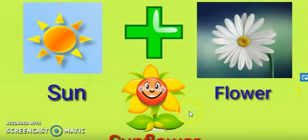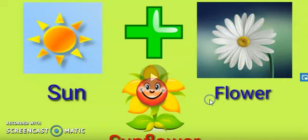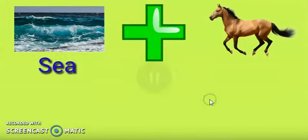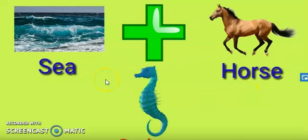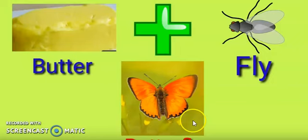Sun plus flower, it makes sunflower. Sea plus horse, what will come? Yes, seahorse. Butter plus fly gives you butterfly. But these are only words that when we combine two words, two independent words, and it gives a new word, it is known as compound word.